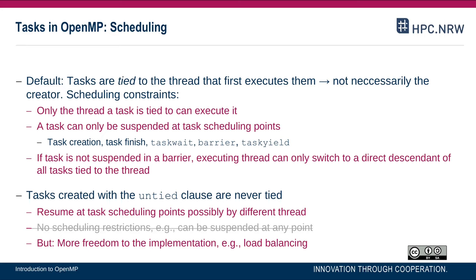There are also untied tasks in OpenMP. This is enabled by adding the untied clause to the pragma omp task construct or any other task-generating construct. That means a task might be suspended, and when it's resumed, this might be done by a different thread — not required to be different, but it could be, only if you include the untied clause.